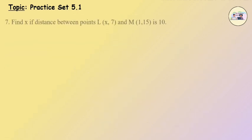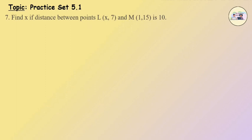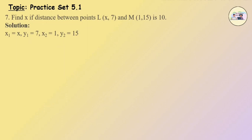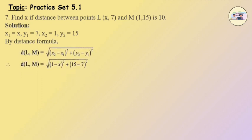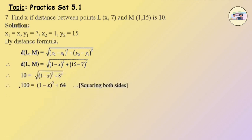Question No. 7: Find x if the distance between points L and M is 10. Solution: x1 is equal to x, y1 is equal to 7, x2 is equal to 1, y2 is equal to 15. By distance formula, distance of LM is equal to under root (x2 minus x1) the whole square plus (y2 minus y1) the whole square. Therefore distance of LM is equal to under root (1 minus x) the whole square plus (15 minus 7) the whole square. Therefore 10 is equal to under root (1 minus x) the whole square plus 8 square.